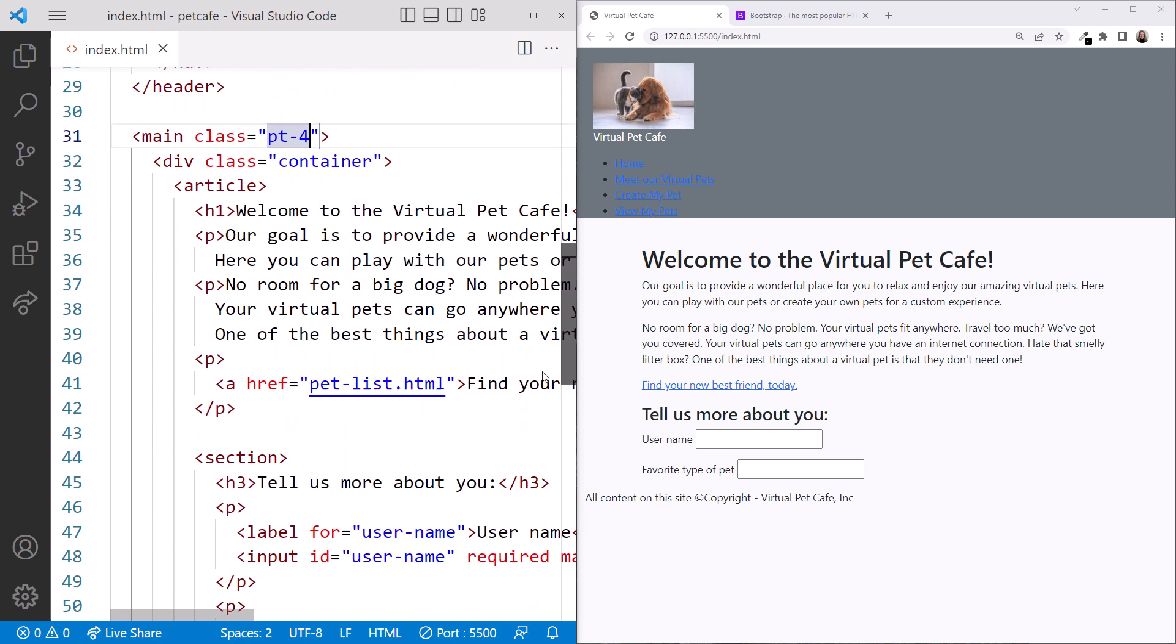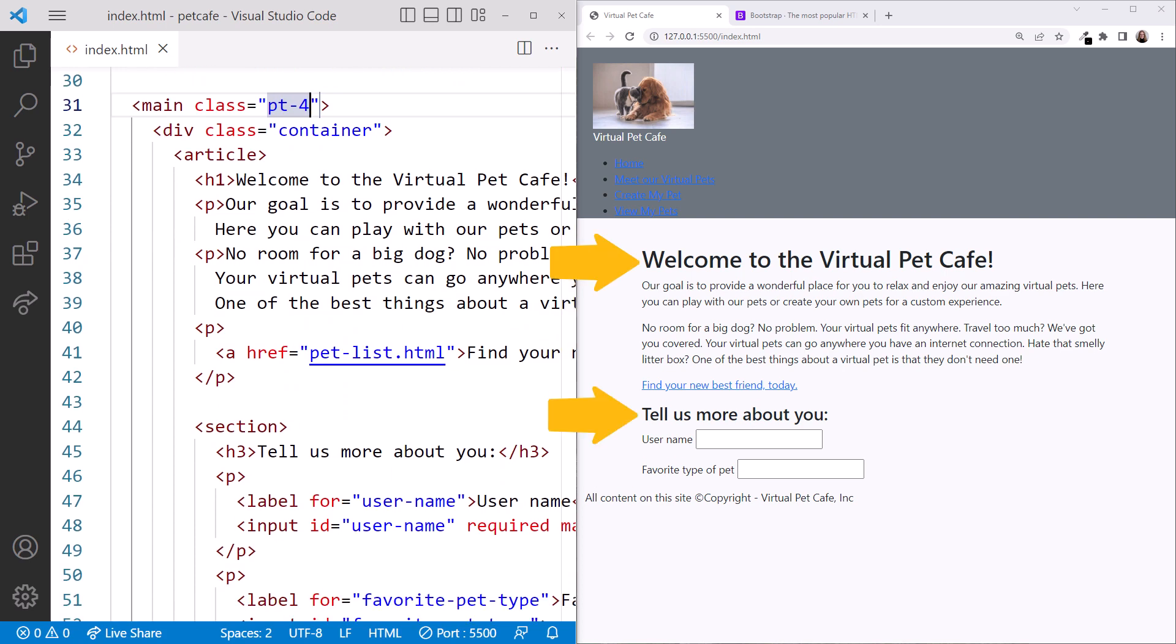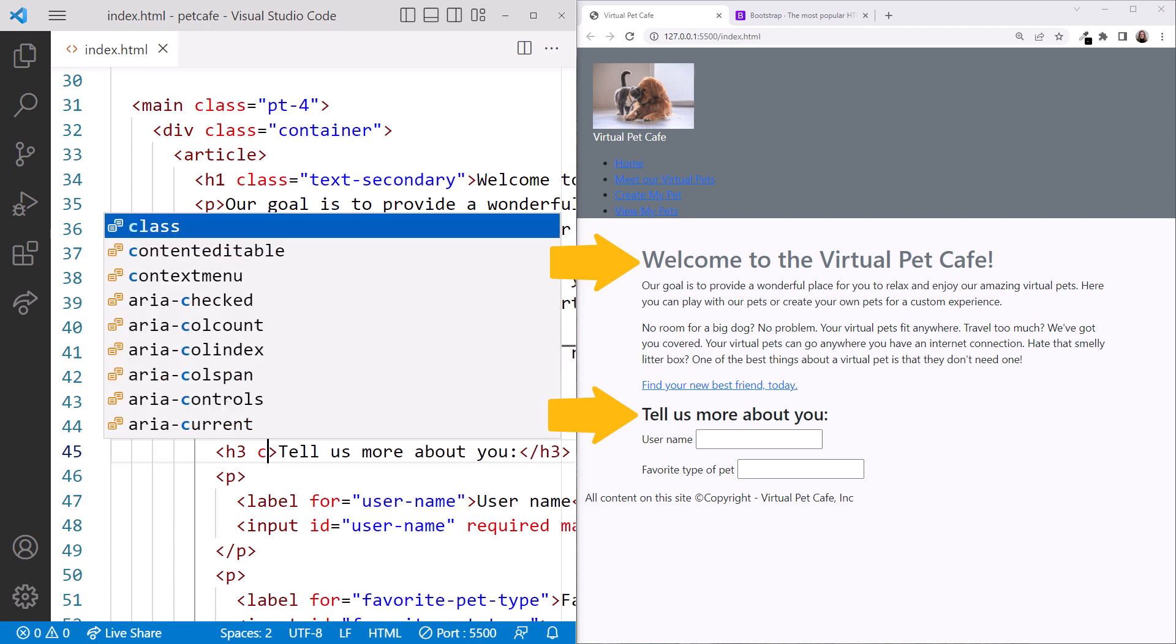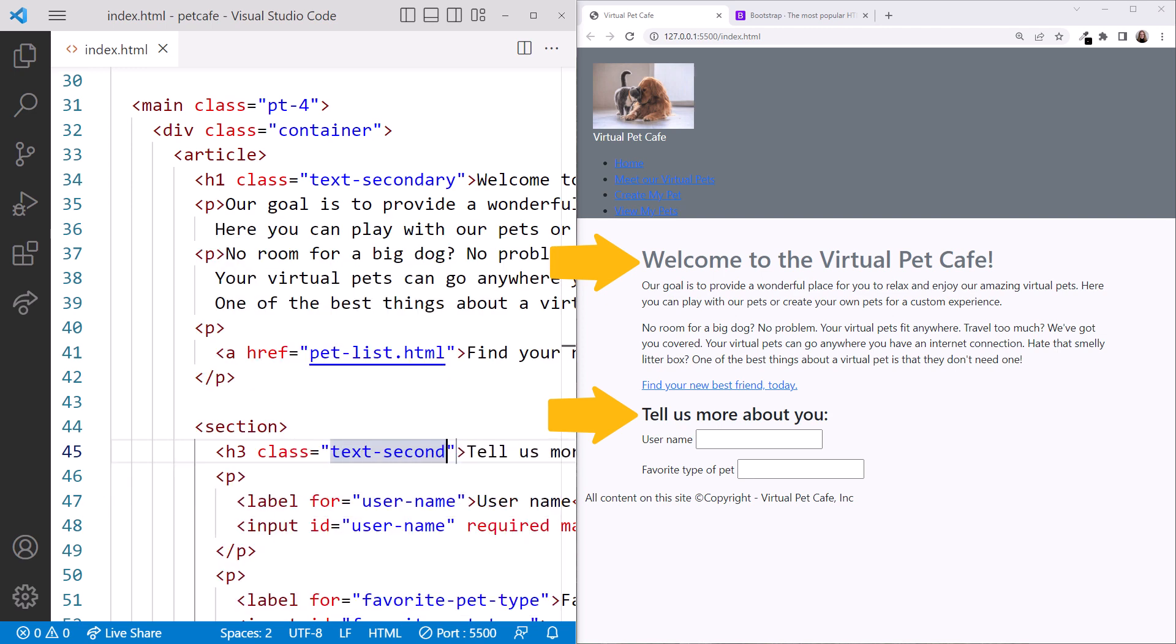Scrolling down, let's color our headings as well. In the H1 element, we'll add a class and set it to TextSecondary. And do the same for the H3 here. Class equals TextSecondary.